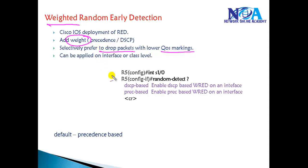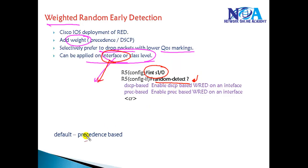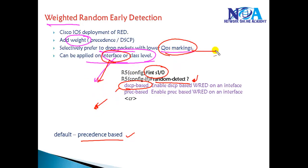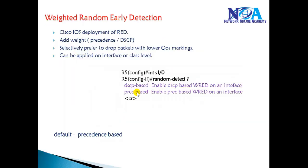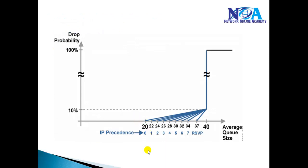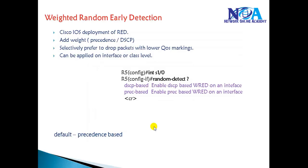This is Cisco's addition to the existing Random Early Detection mechanism. We can apply this either at the interface level or at the class level. On older IOS versions, you can go to the interface and simply type 'random-detect' and press enter. If you do not define anything, it will use the default based on IP precedence values. If you want to change to DSCP-based detection, you can change that parameter. There are predefined queue lengths for each precedence value — for example, precedence value 1 has a minimum threshold of 22, and other precedence values have different minimums. These parameters can also be changed manually.